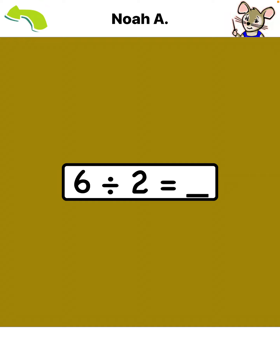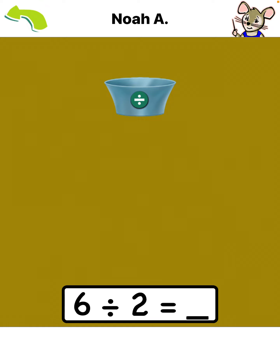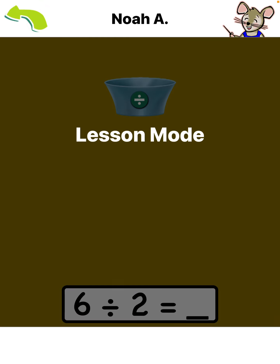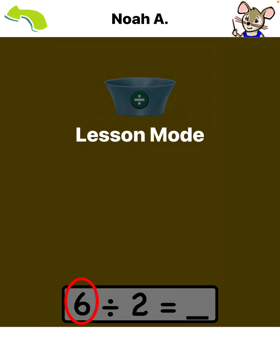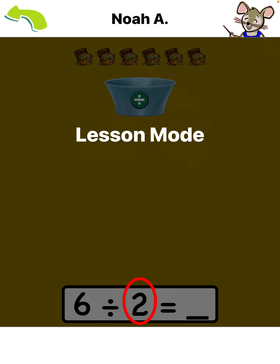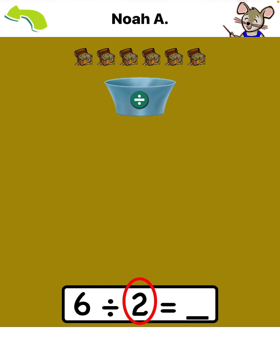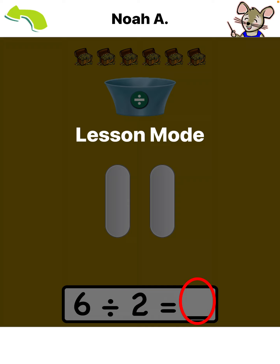School. This is a division problem: six divided by two. You can think of division as separating items into equal groups. This number tells us to start with six items. This number tells us to separate the items equally into two groups. The answer will be the number of items in each group.